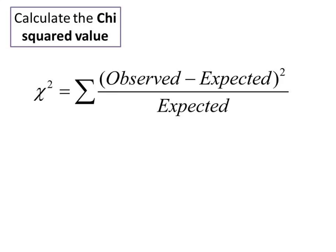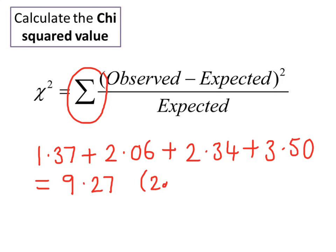Now we need to take each of the four values we've just calculated and add them together. This value, 9.27, is our chi-squared value.